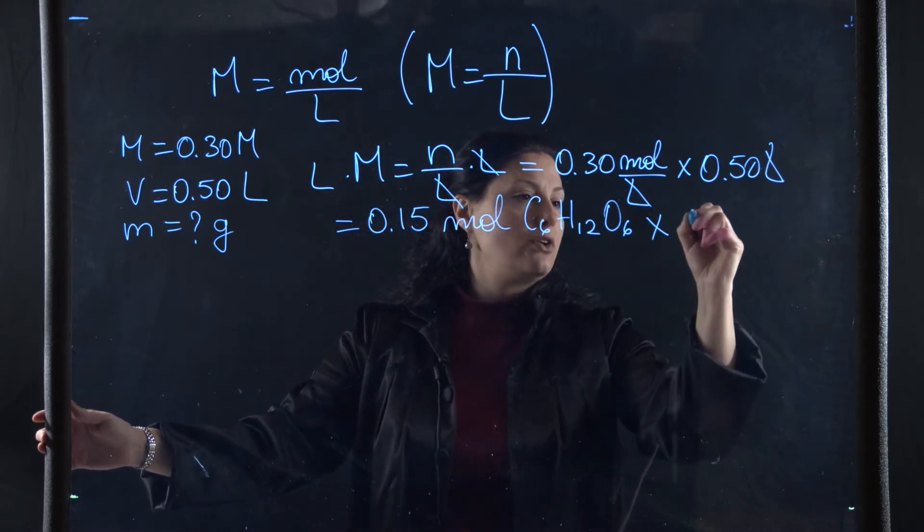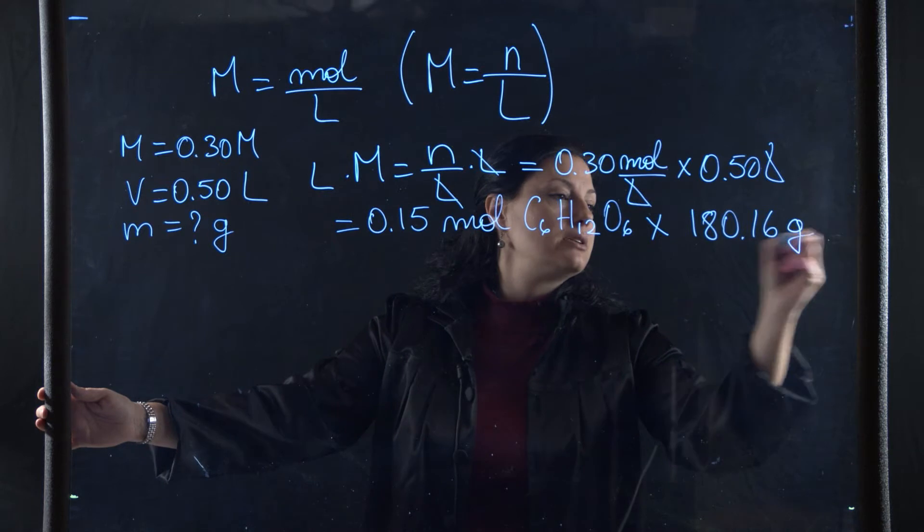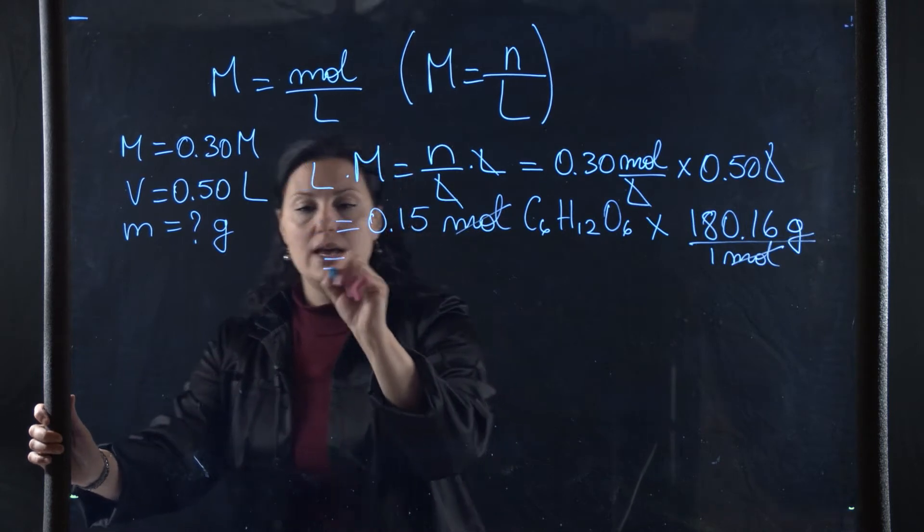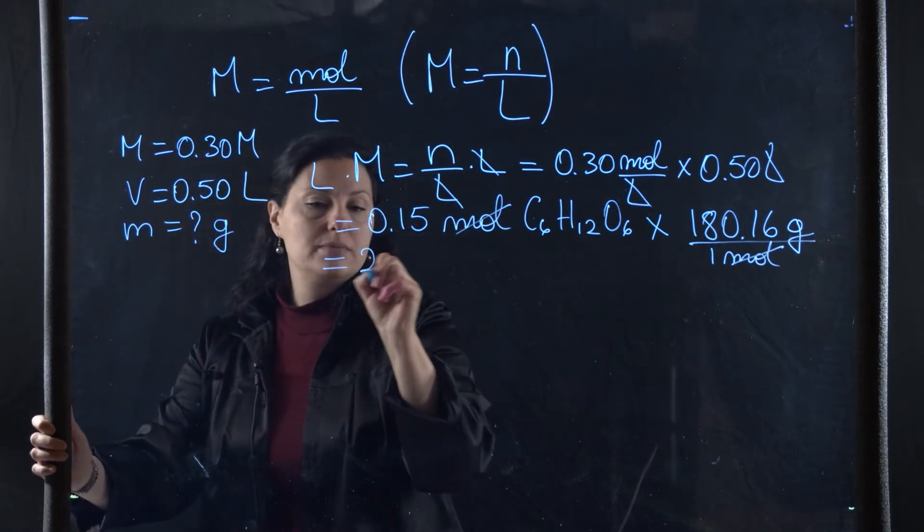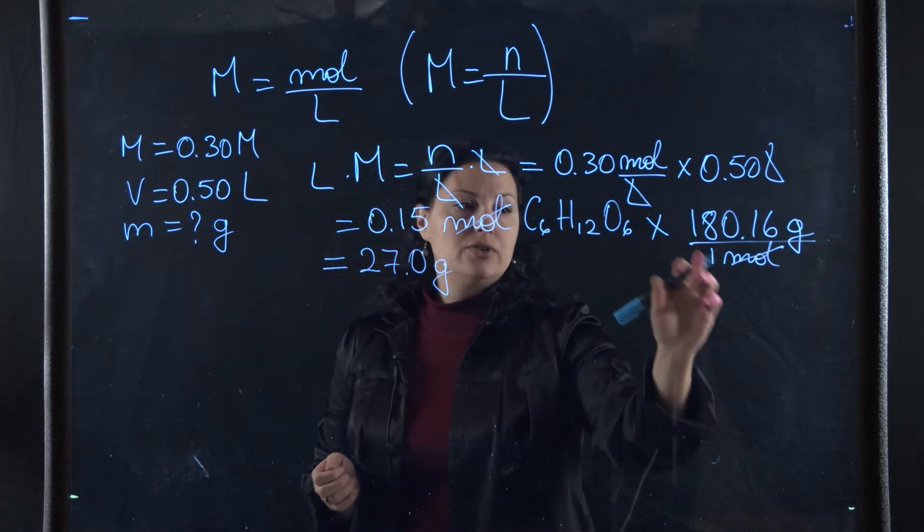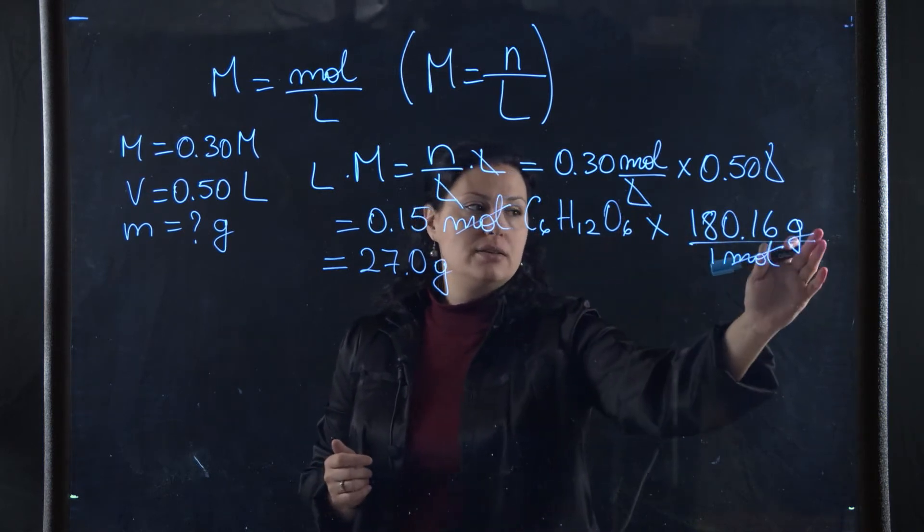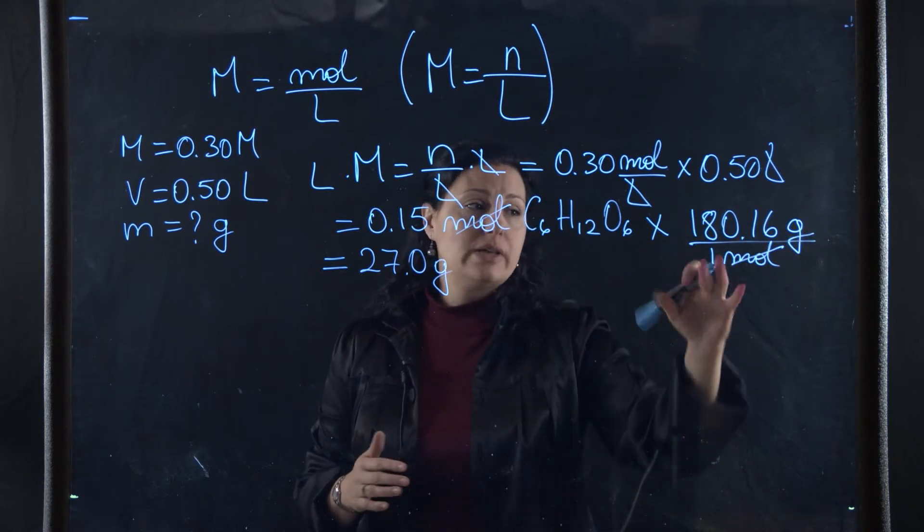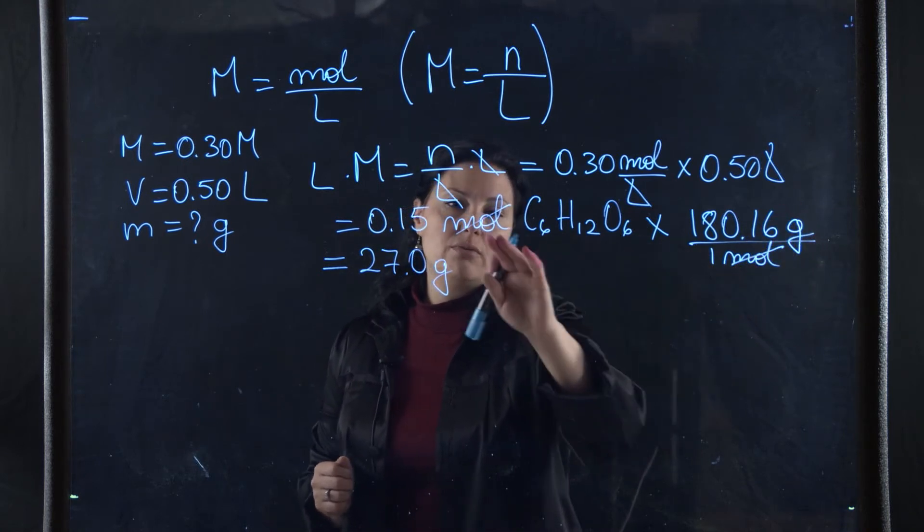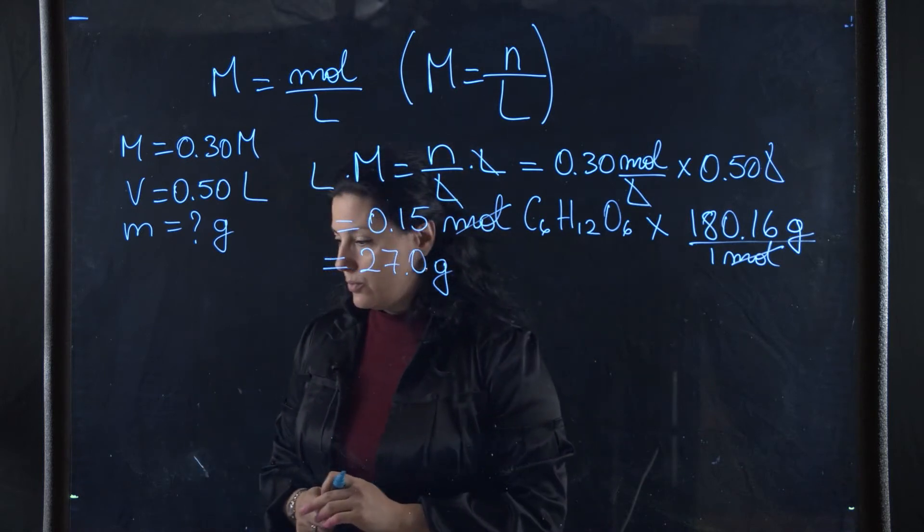I want moles at the bottom and grams at the top, so 180.16 grams per one mole of glucose. My moles will cancel and I get 27 grams of glucose. Notice I multiply with the molar mass because I want the grams. If I needed the moles I would divide, but in this case I want grams, so my moles have to be at the bottom so they cancel out.